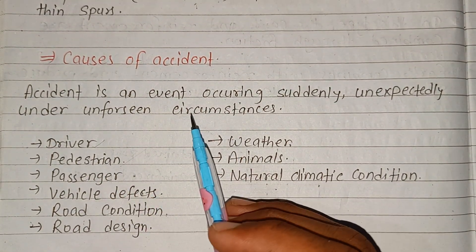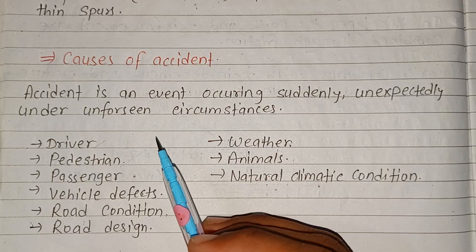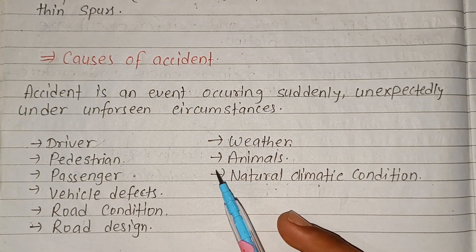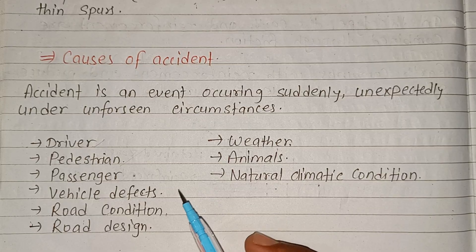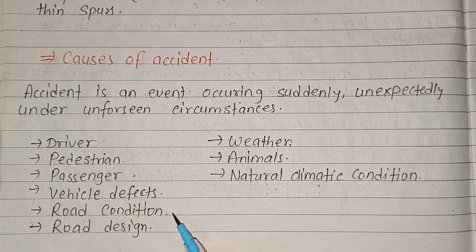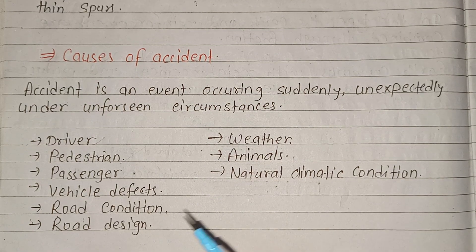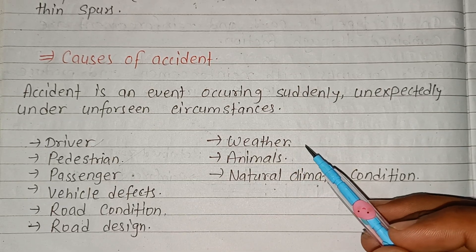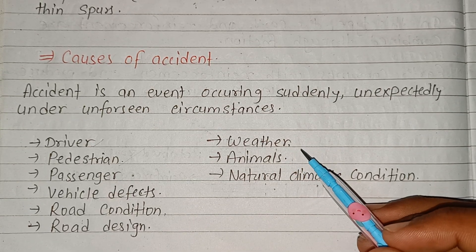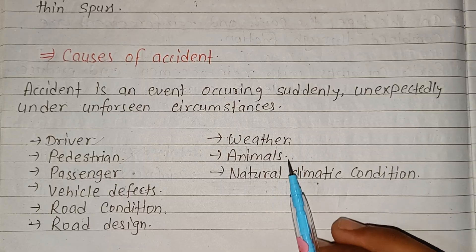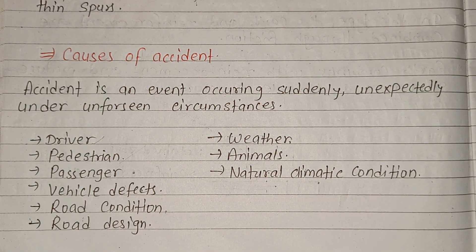When you come across the road you can't see it — the road condition you can't see. The weather conditions such as wind, fire, and climate conditions can also cause accidents.